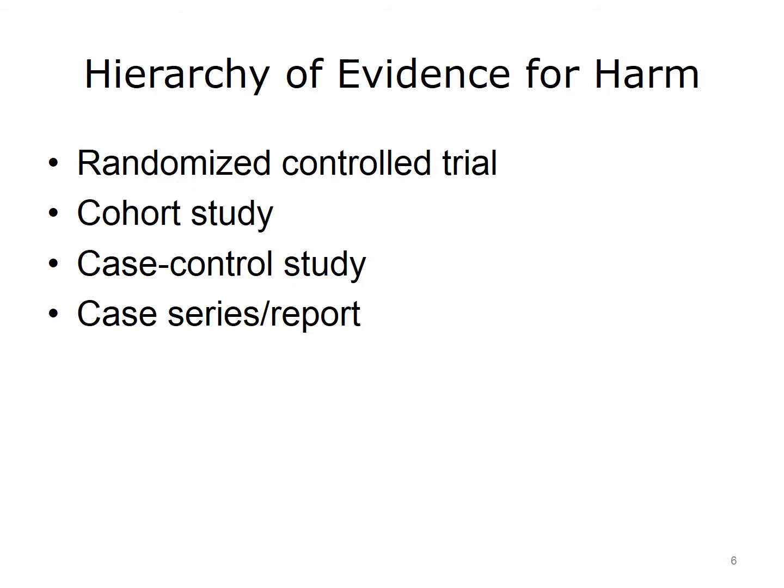When we're assessing studies of harm, we essentially have a hierarchy of evidence. A randomized controlled trial provides the best form of evidence, and often we can use a randomized controlled trial to determine harm. The next best study is a cohort study, followed by a case-control study, and then a case series or an individual case report, the weakest form of evidence.